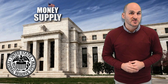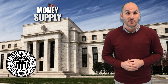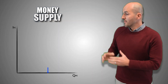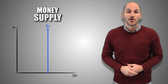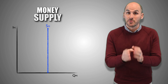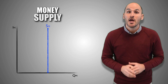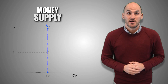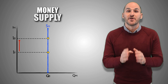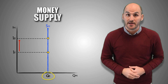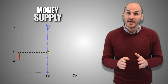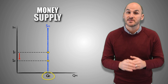We'll cover monetary policy and the Federal Reserve in another video. For now, let's take a look at the money supply. This is the money supply curve. Notice that it is a perfectly vertical curve, implying that the relationship between the nominal interest rate and the quantity of money supplied is constant. As nominal interest rates rise or fall in the aggregate economy, the Federal Reserve will maintain a fixed quantity of money supplied.